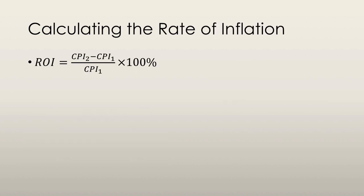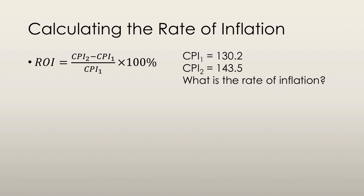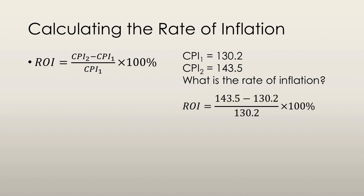How do you calculate the rate of inflation? The equation is: CPI in the second year minus CPI in the first year, divided by CPI in the first year, multiplied by 100. For example, with CPI₁ = 130.2 and CPI₂ = 143.5, we calculate: (143.5 − 130.2) / 130.2 × 100, and we get a rate of inflation of 10.2%.